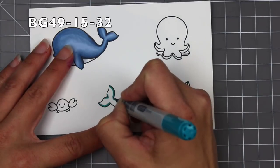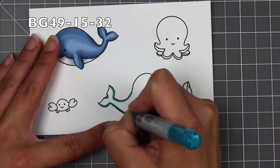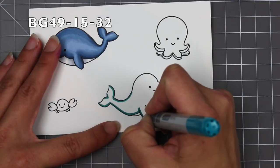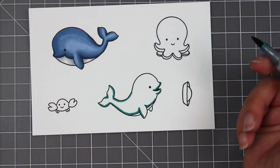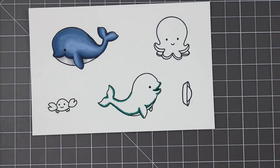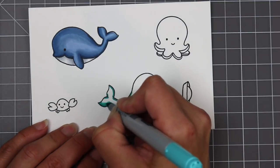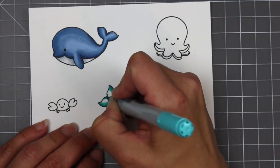So I'm just going through adding a little bit of highlight on the belly of that whale. And then I'm going to come in and I'll start on the dolphin. And that is going to be the same process. I'm coming in with the darkest color, which I have listed at the top, the BG49, 15, and 32.